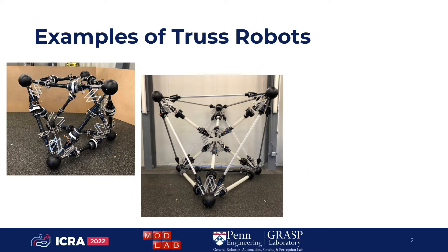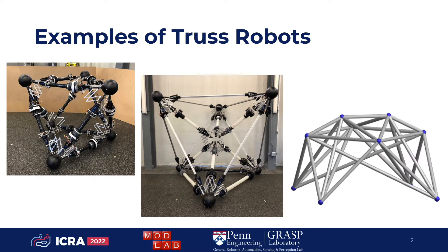Truss robots are parallel robot systems consisting of linearly actuated members that are connected together at nodes to form a rigid truss. This slide shows some of the hardware we have been developing in the Grasp Lab at Penn, which you can see in the exhibition hall if you're here in person. However, the work in this presentation applies more generally to arbitrary truss robot topologies, which include things like variable geometry trusses, modular parallel robots, tensegrity robots, and other similar systems.